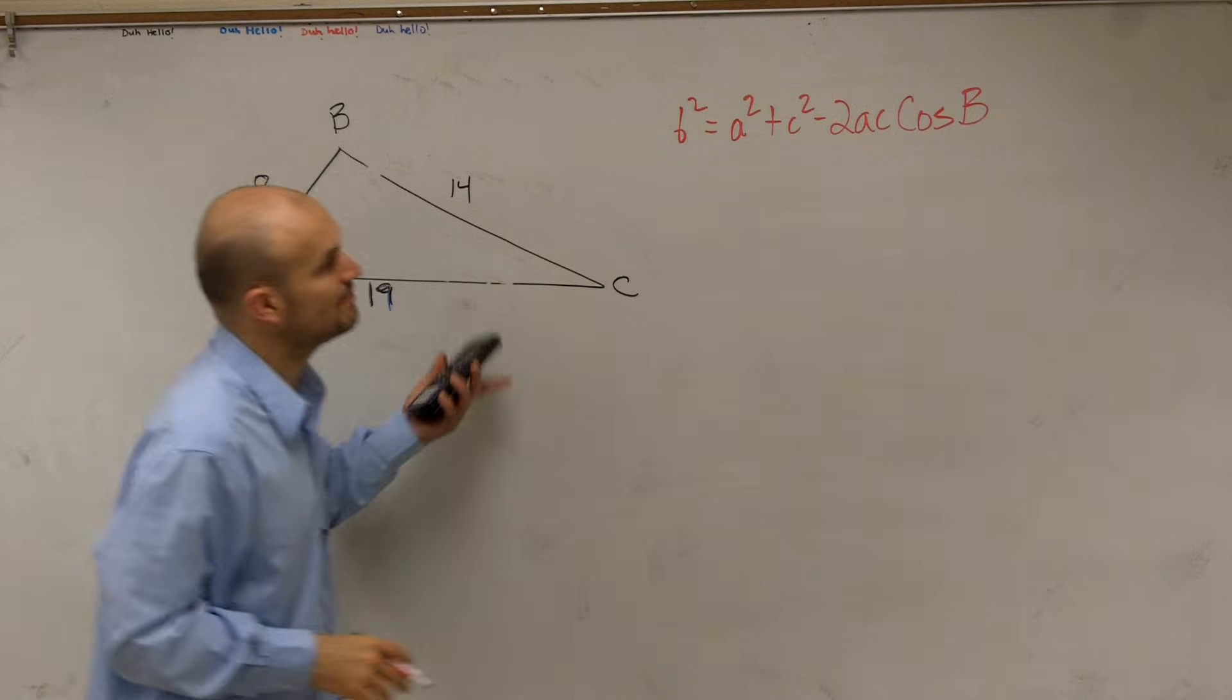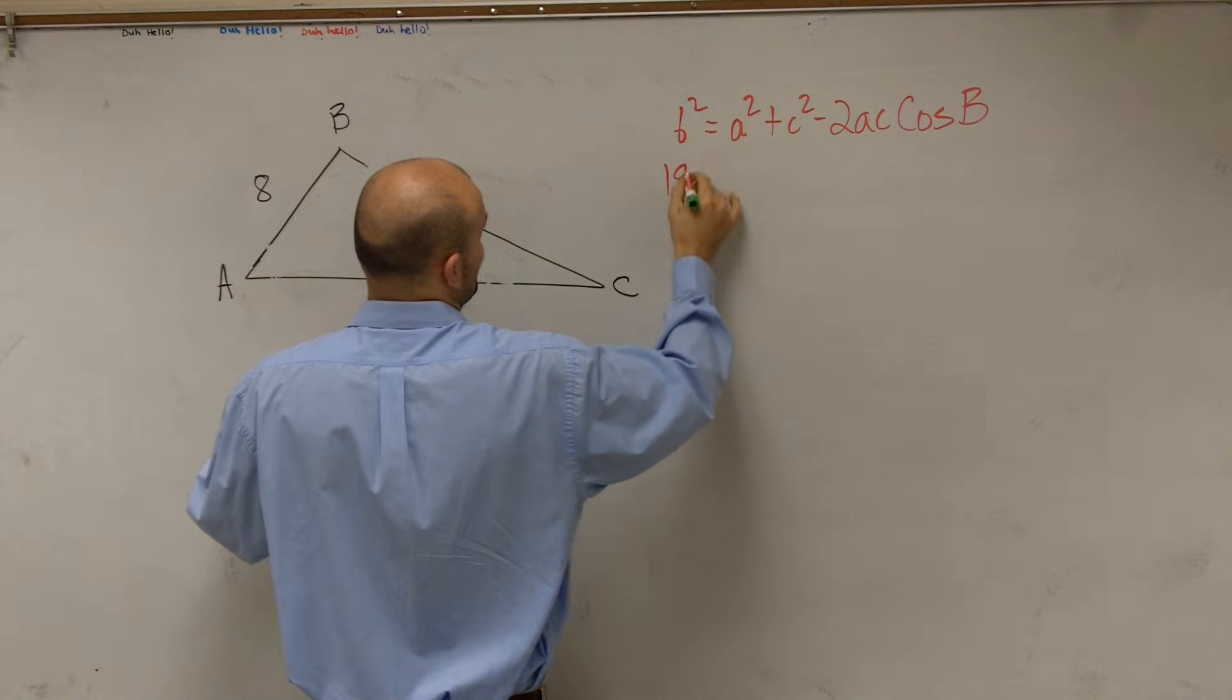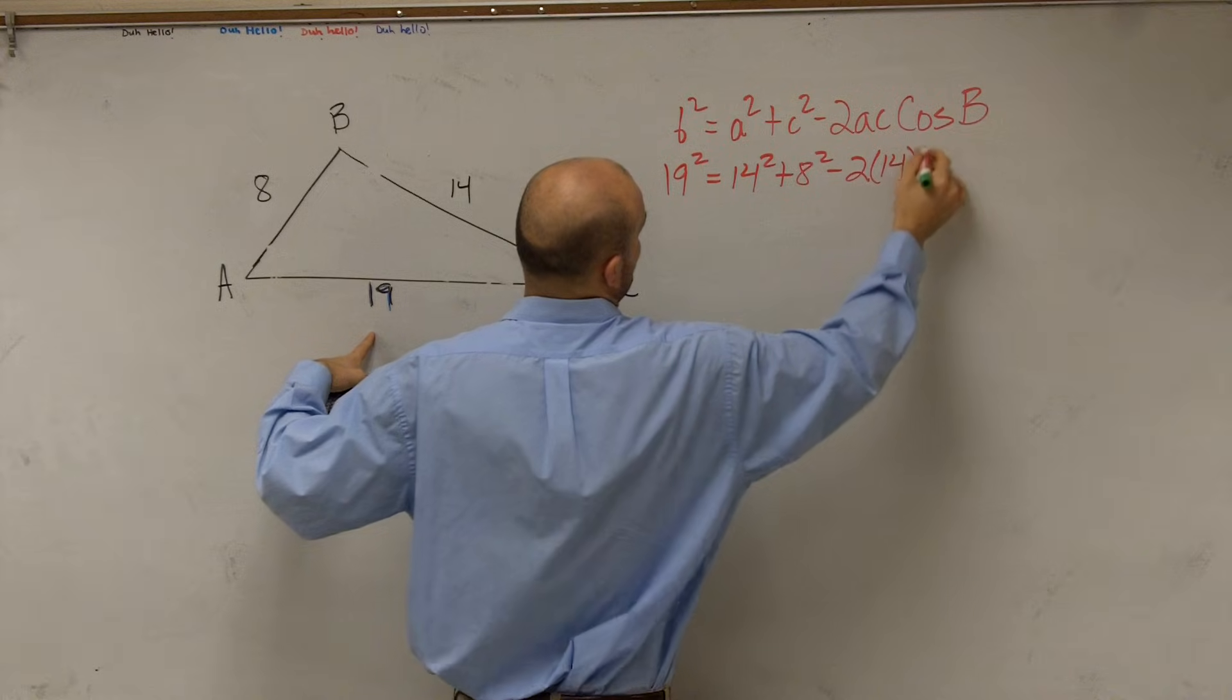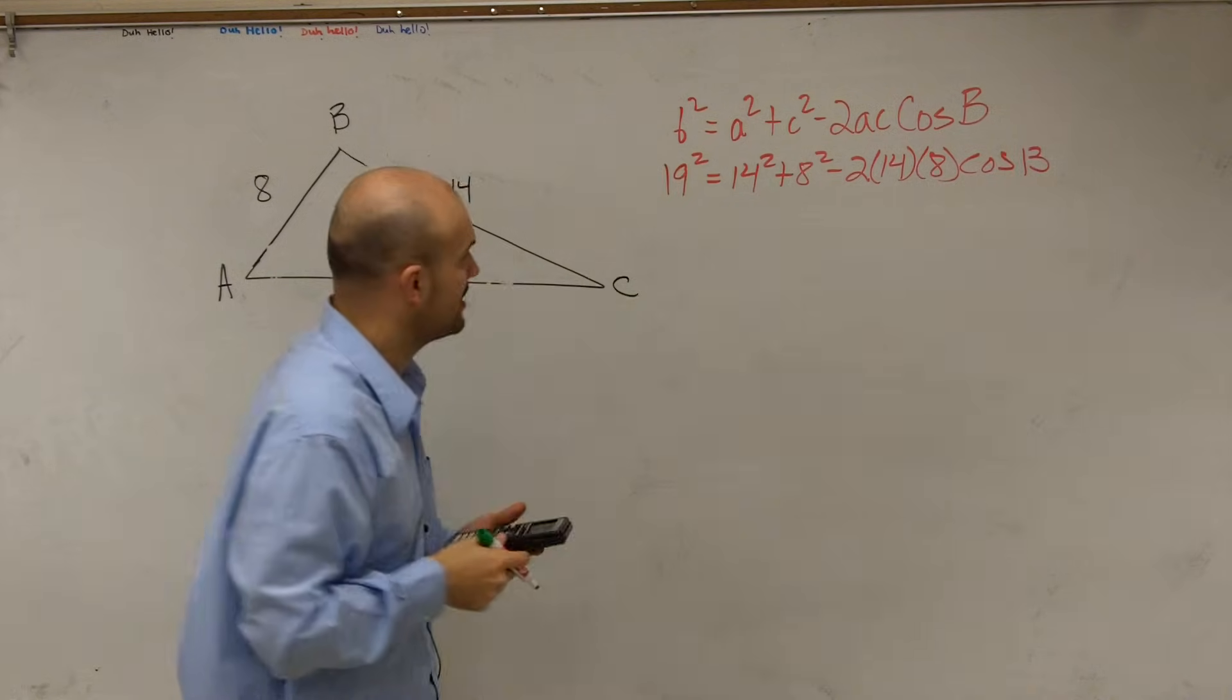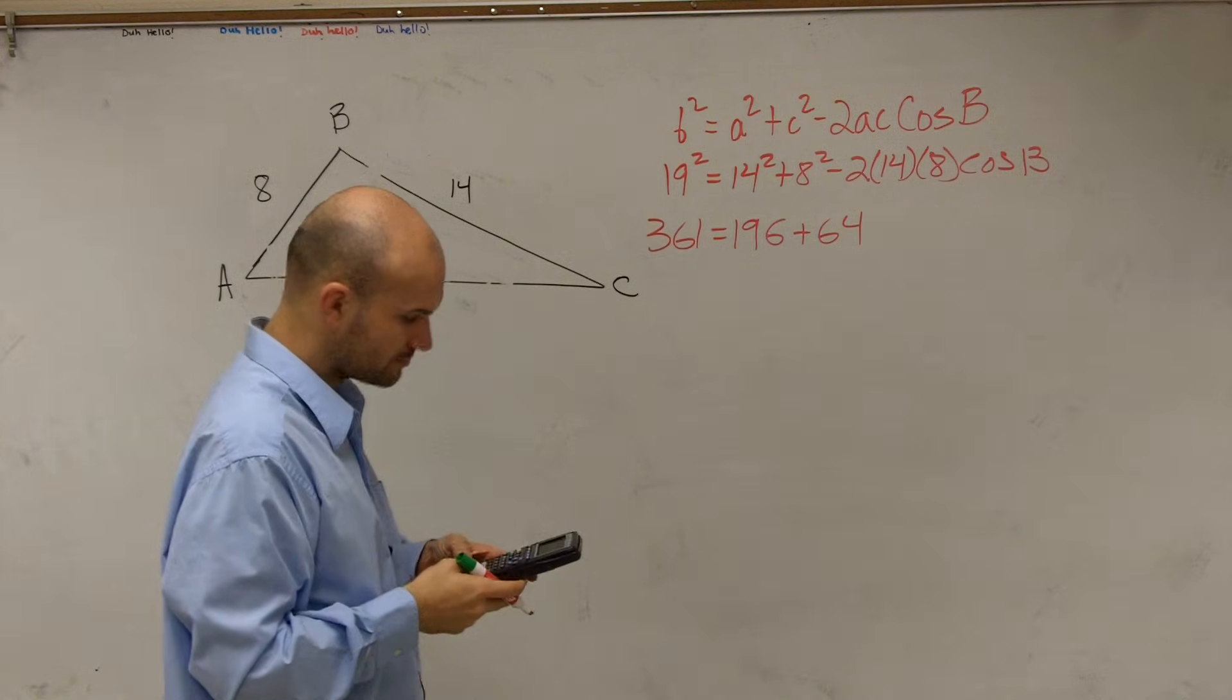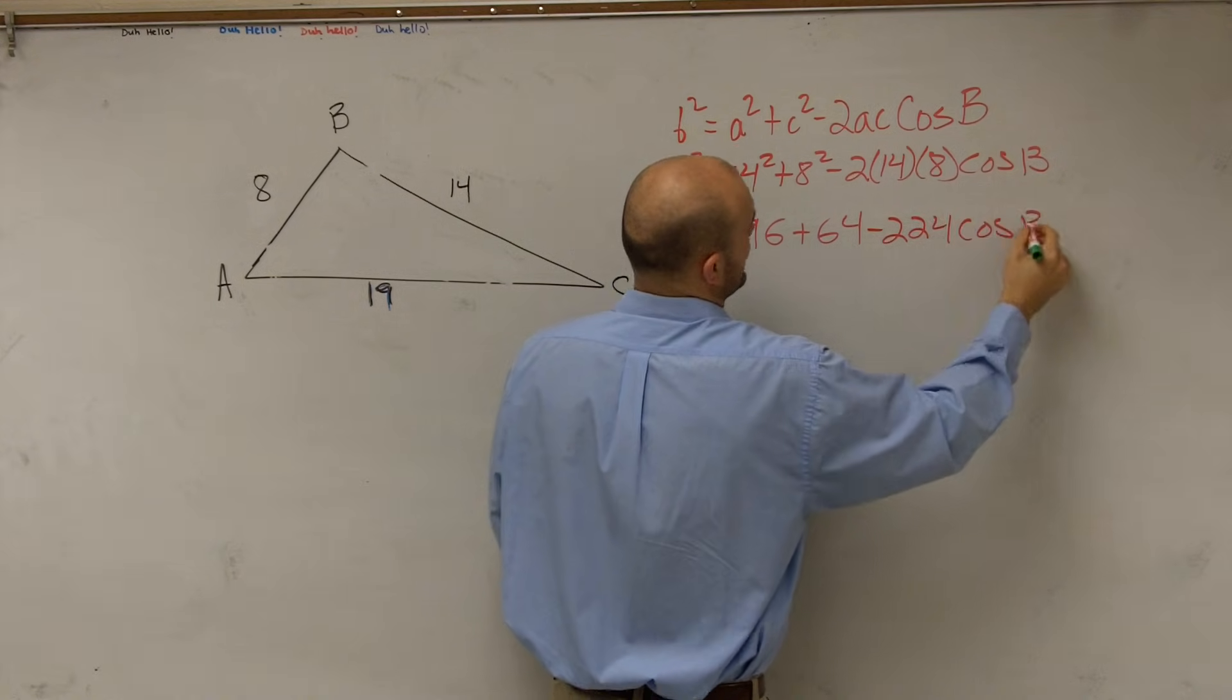So now what I'm simply going to do is just plug in my values for b, a, and c, and then solve for cosine of B. So we have b is going to be 19 squared equals 14 squared plus 8 squared minus 2 times 14 times 8 times the cosine of B. 19 squared is going to be 361 equals 196 plus 64 minus 2 times 14 times 8 is going to be 224 times the cosine of B.